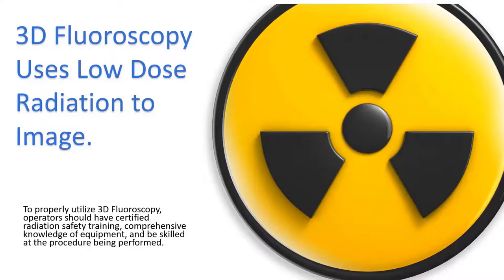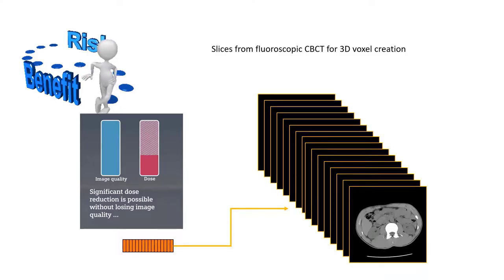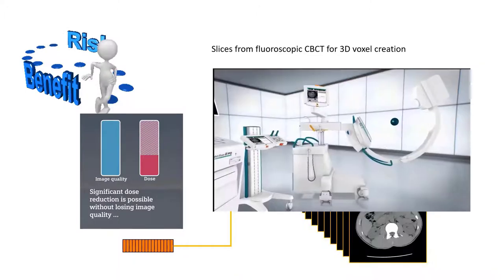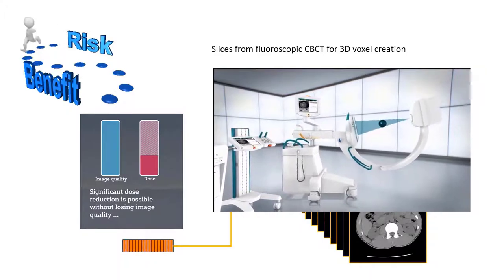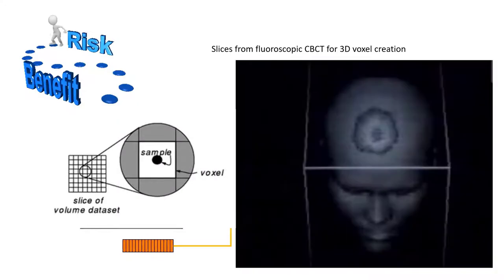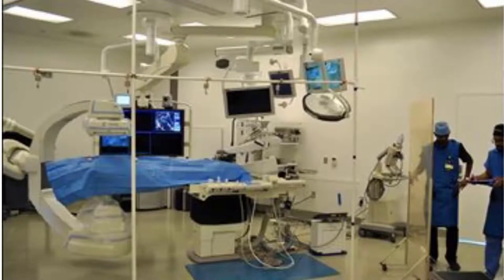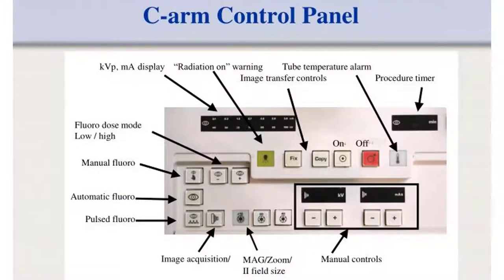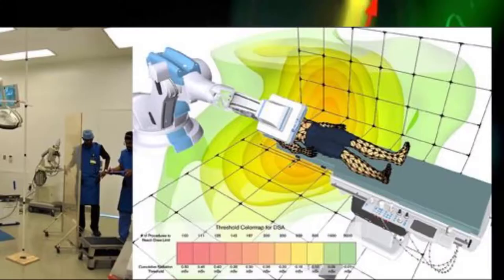To properly utilize 3D fluoroscopy, operators should have certified radiation safety training, comprehensive knowledge of the equipment they are using, and be skilled at the procedure being performed. Using cone beam CT for 3D fluoroscopy, we create image slices that are stacked to create a voxel — a solid block of data or image. The operator selects the time of exposure, the amount of ionizing radiation (milliamperage or mA), and the KVP (kilovolts peak) used to penetrate the tissue. These factors are called exposure technique.